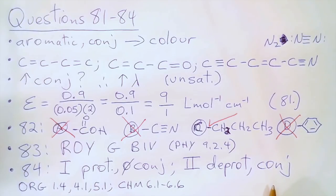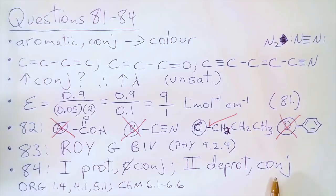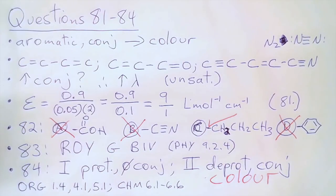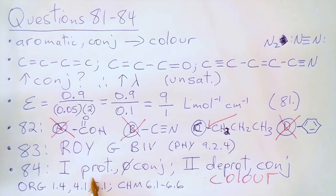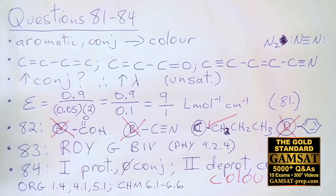Structure two is the deprotonated form — protons have been removed at the top — and it is fully conjugated everywhere, including the carboxylate anion in the bottom right corner with its carbon-oxygen double bond and single bonds throughout in between double bonds. This complete conjugation means it must have color. At low pH, high hydrogen ion concentration gives the protonated form; at high pH, you get the deprotonated form. Therefore structure one is at low pH and is colorless. The answer for question 84 is A. You can review resonance and conjugation in organic chemistry 1.4, 4.1, 5.1, and acids and bases in chemistry 6.1 to 6.6.